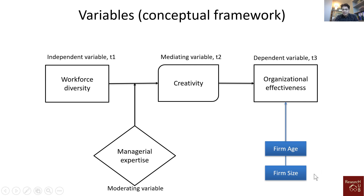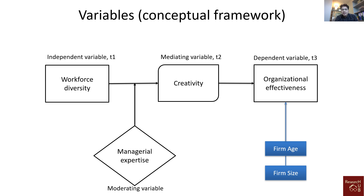Only after controlling for firm age, firm size, and similar variables can we say there is a true effect of the independent, mediating, and moderating variables on the dependent variable. Sometimes we see effects of these variables, but when we control for variables that by default affect the dependent variable, the significance vanishes. That means the control variables explain most of the variation, not the independent and mediating variables. For control variables, we typically pick them from previous literature — if prior studies have shown that certain variables have a default effect on the dependent variable, we use them as controls.